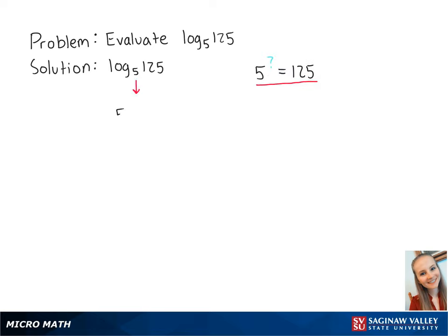We know that 5 to the 3rd power equals 125. Therefore, the log base 5 of 125 equals 3. This is the final answer.